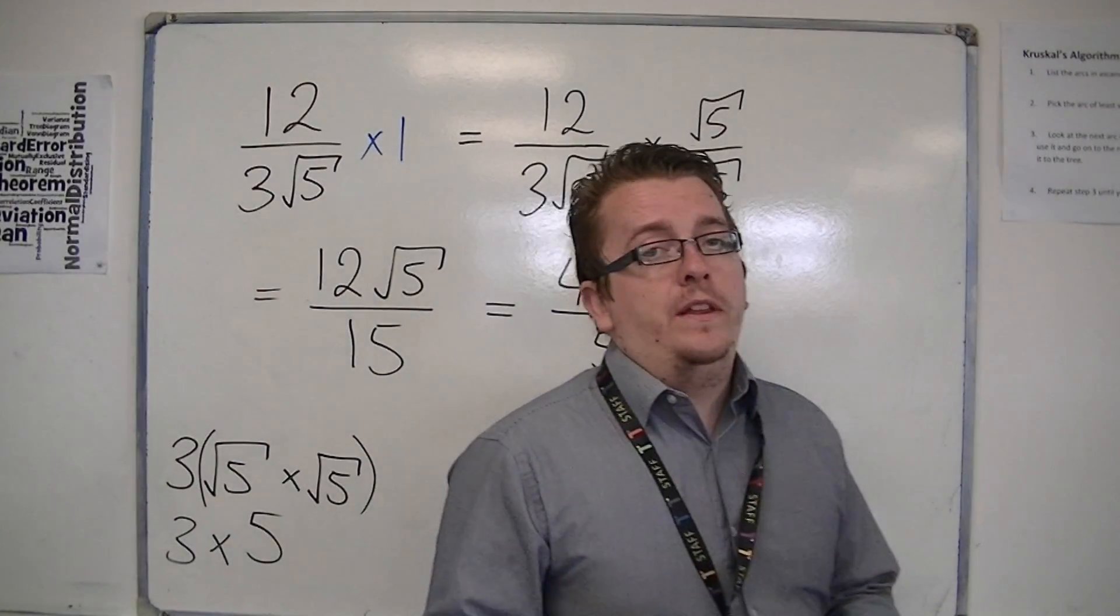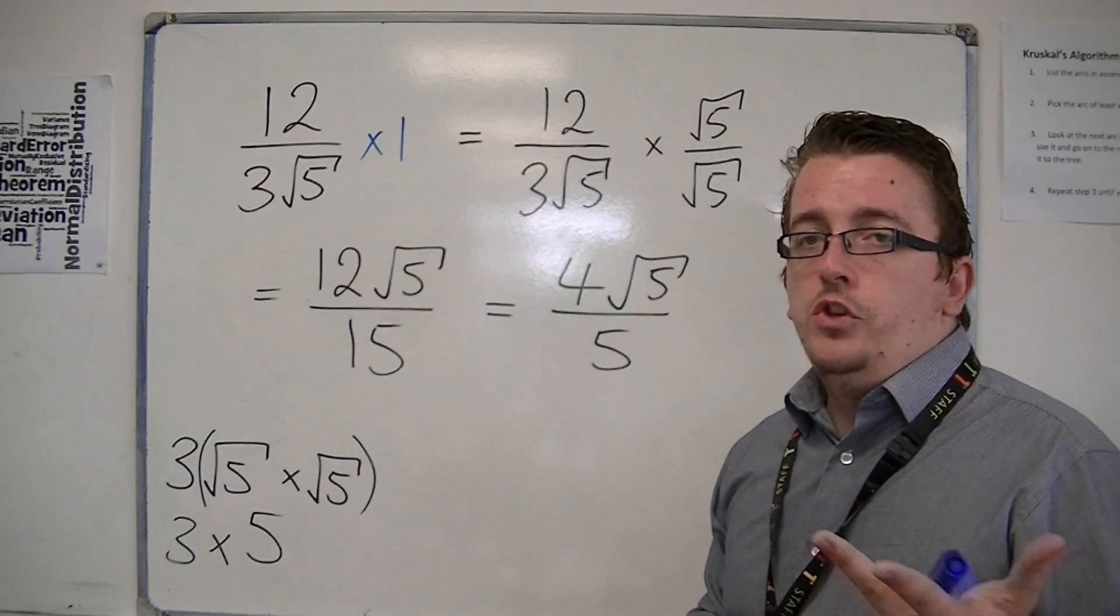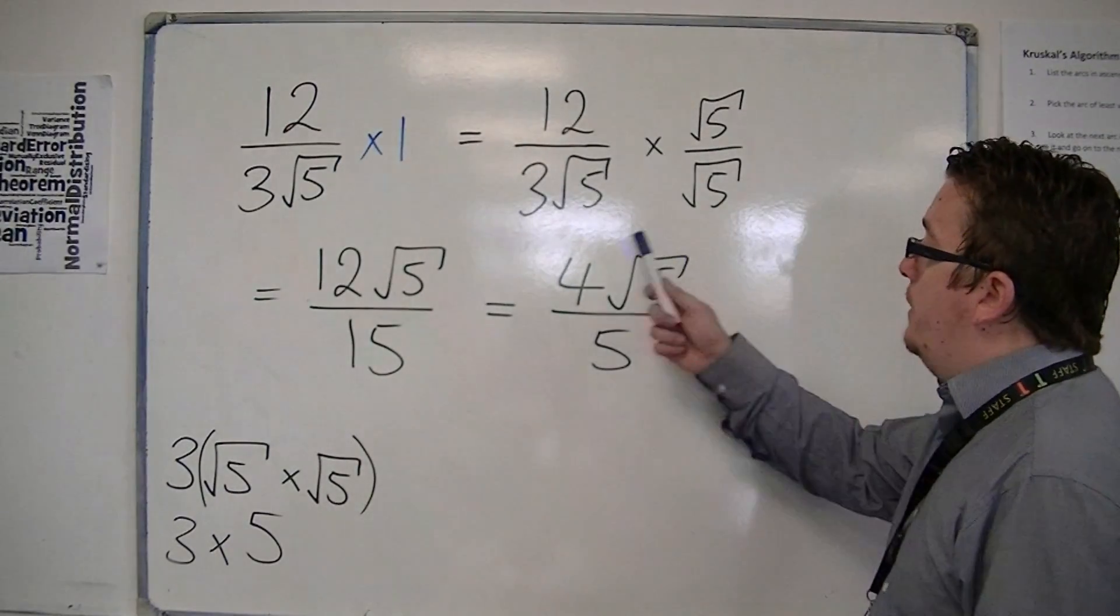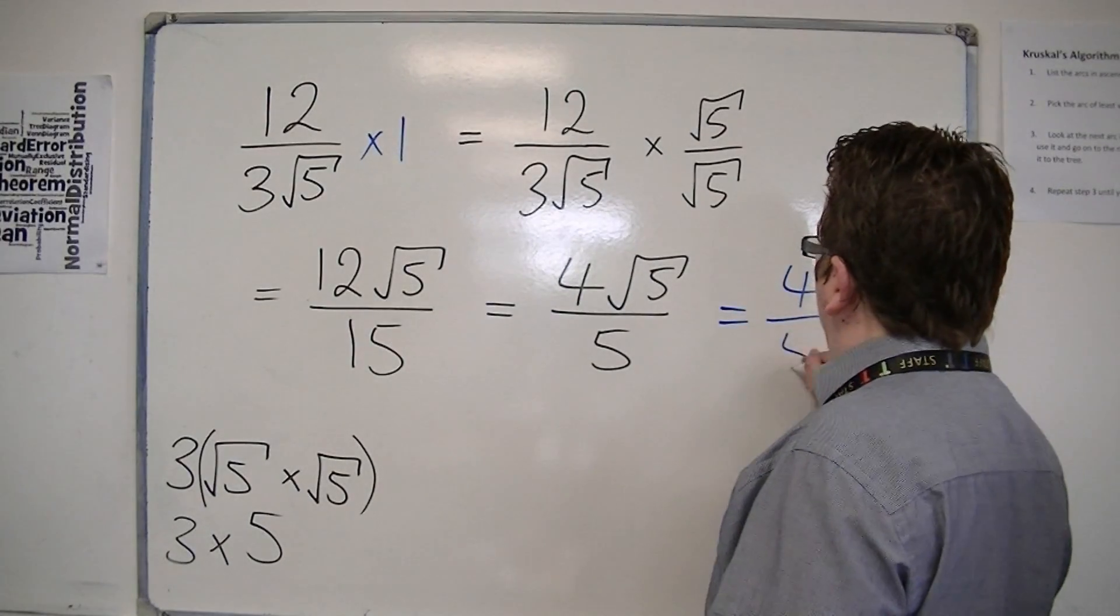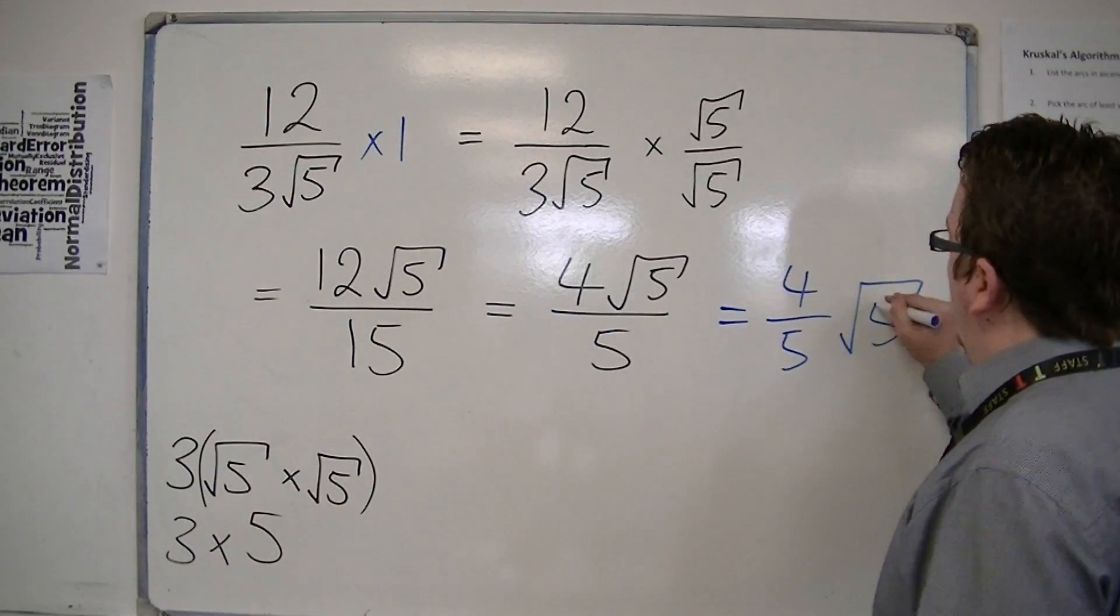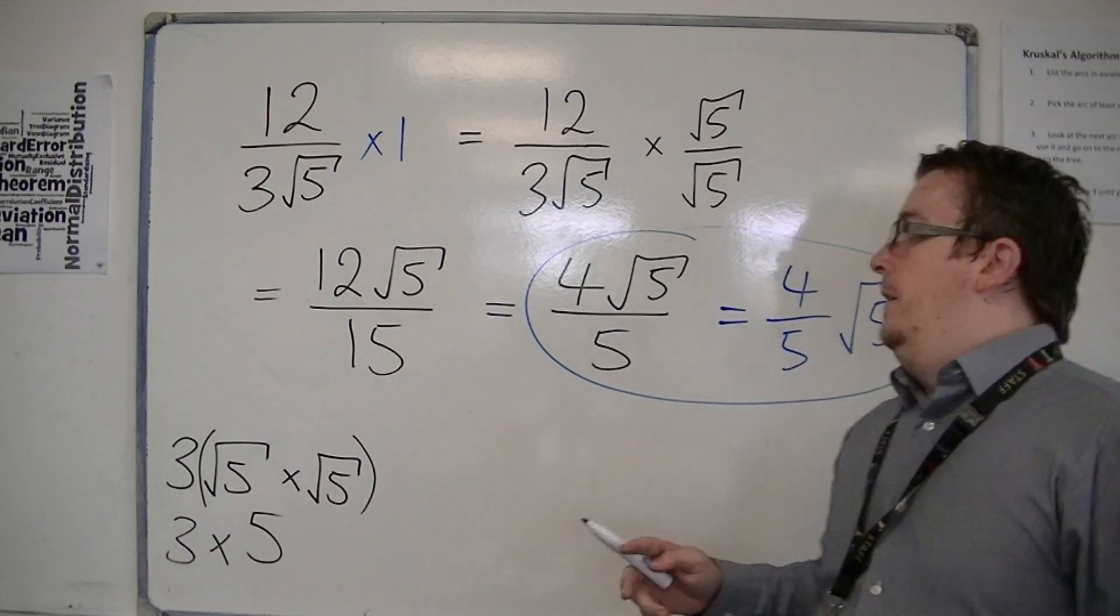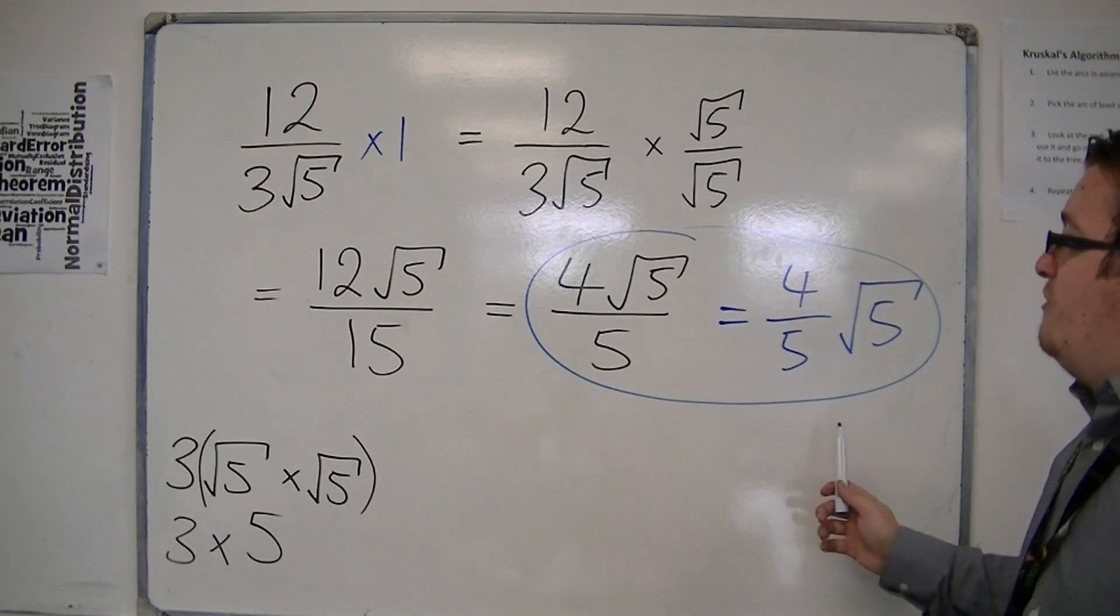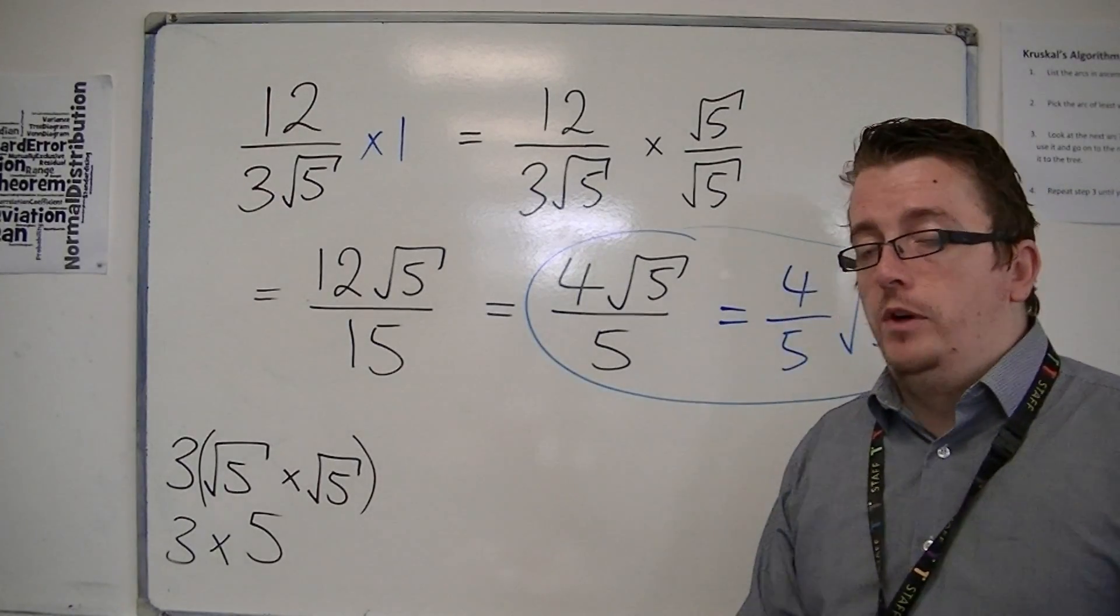Now, one other thing that I should probably point out is that depending on how you want to write it, you can write this as 4 fifths root 5. These two are the same thing. And it doesn't matter in which way round you write them, and it's really up to you which you find the easiest to work with.